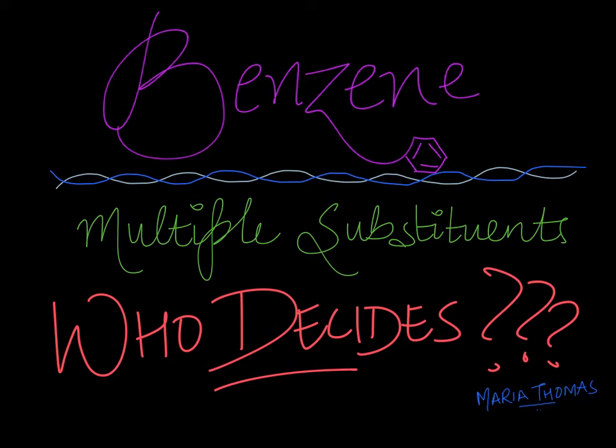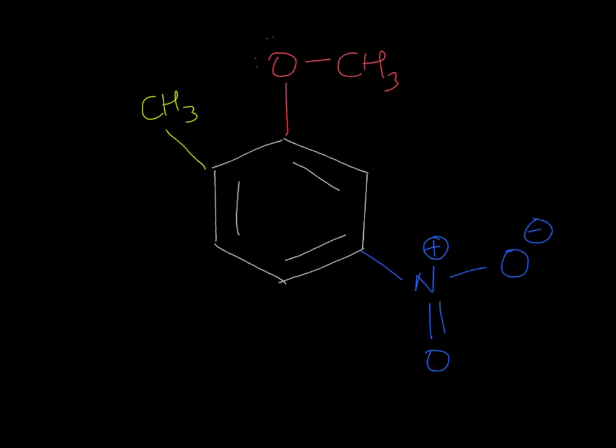Hi everybody and welcome to Organic Chem Analogies. My name is Maria Thomas and today we'll talk about how to add something to a benzene when there's already a lot of substituents on the ring. In such a case the big question is who gets to decide where the new group sits.